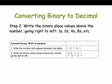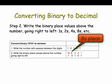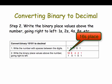Step 2: Write the binary place values above the number going right to left. So we start with the ones place, then there's the twos place, 2 times 1, then the fours place, the eights place, and the sixteens place. Each place going right to left is twice the value of the place to its right.